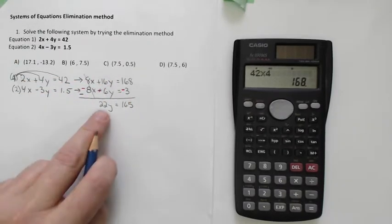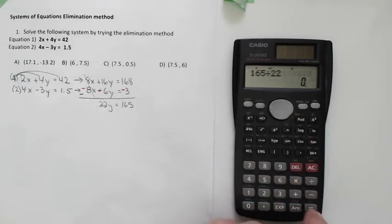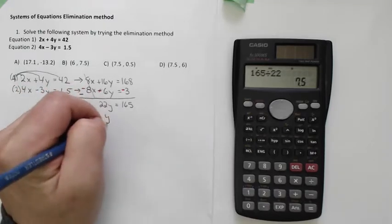Now to solve my y, I'm going to divide by 22. That leaves me with 7.5 for my y.